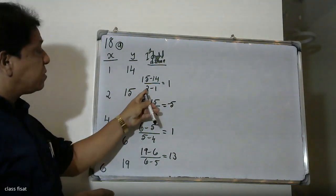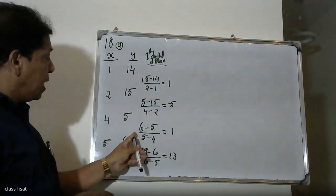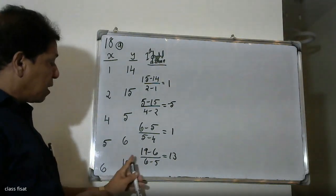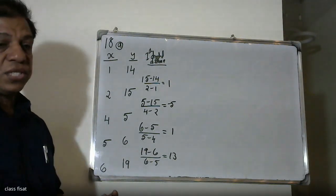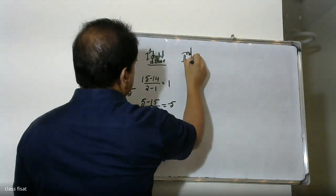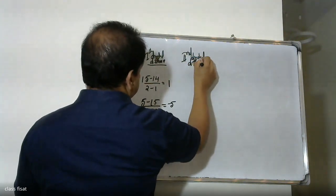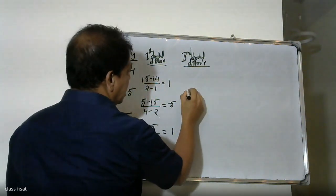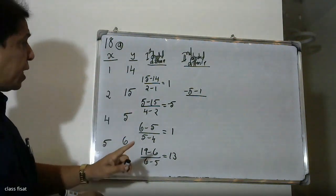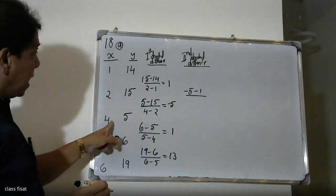That is 2 minus 5. Then 2 minus 5 minus 7. Here the denominator is minus 4, then minus 6. This leads to the second divided difference. Minus 5 is minus 1. Minus 5 is minus 1. If you write minus 5 is minus 1, then 4 is minus 1.